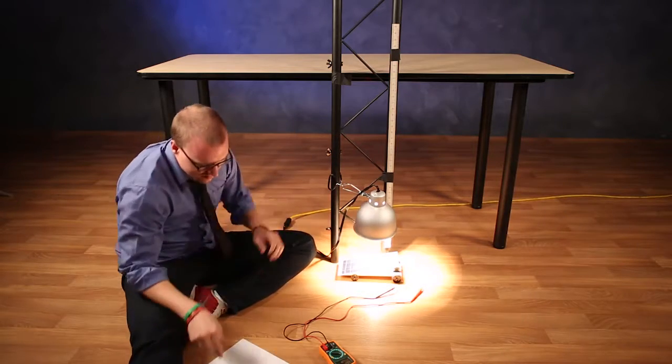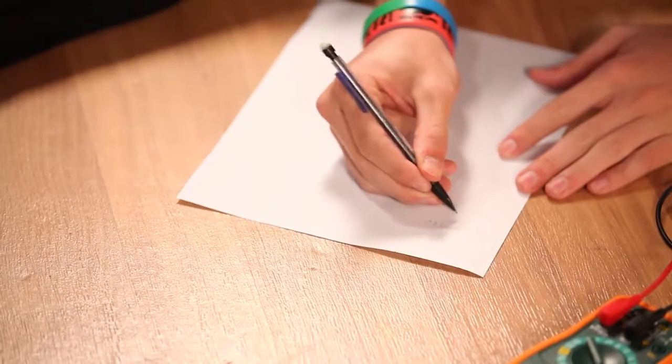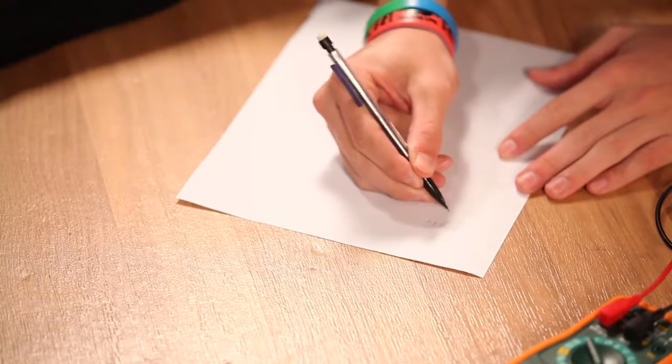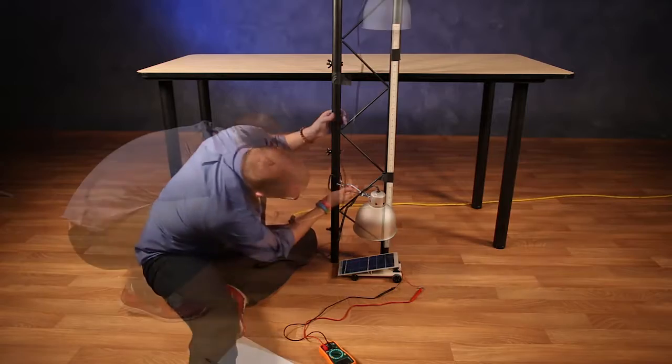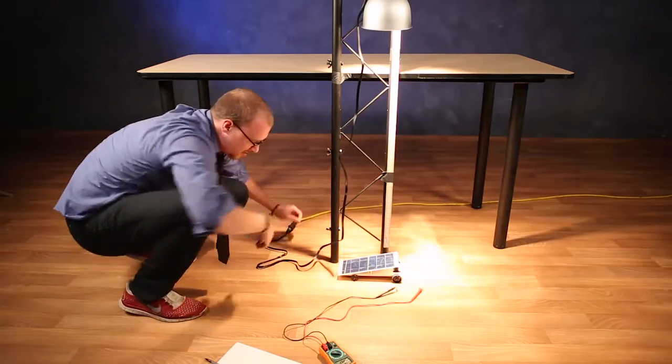Turn on the lamp. Now record the voltage and the distance. Turn off the light and repeat the previous steps until you're one meter above the car.